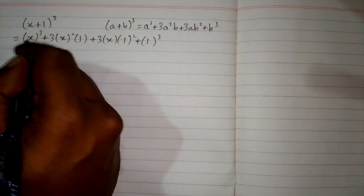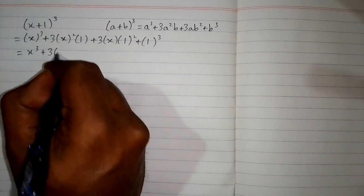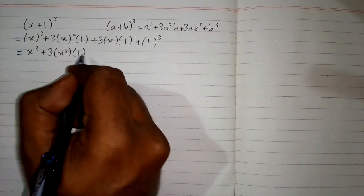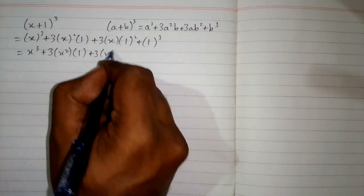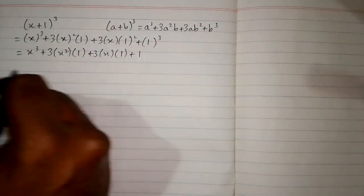Now the cube of x is x³ and the square of x is x². The square of 1 is 1 and the cube of 1 is 1.